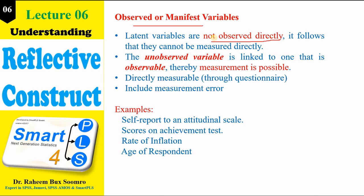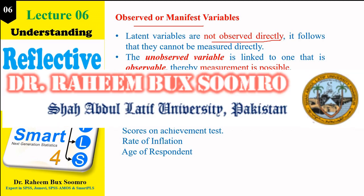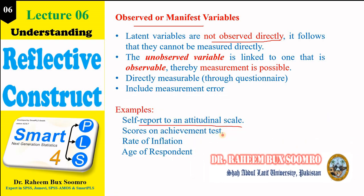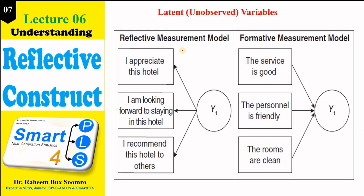Observed or manifest variables are those that can be directly measured. Unlike latent variables, we can measure manifest or observed variables directly through questionnaires. Examples include self-reported educational attitudinal scale scores, scores on achievement tests, rate of inflation, and age of respondents. To measure this type of observed variable we are not required to use the same type of questionnaire as for unobserved variables.